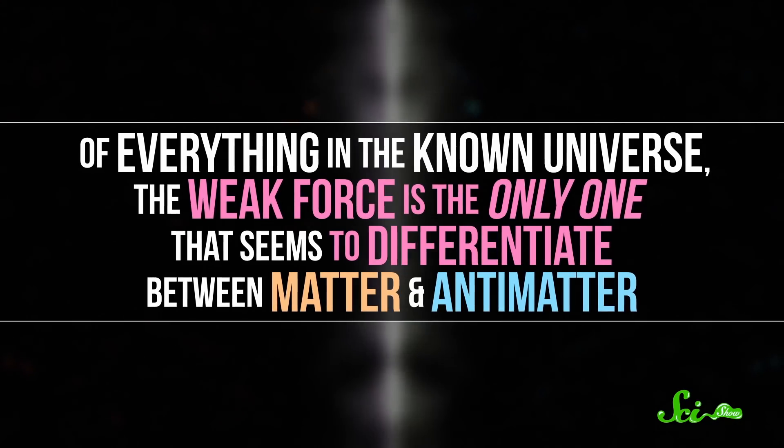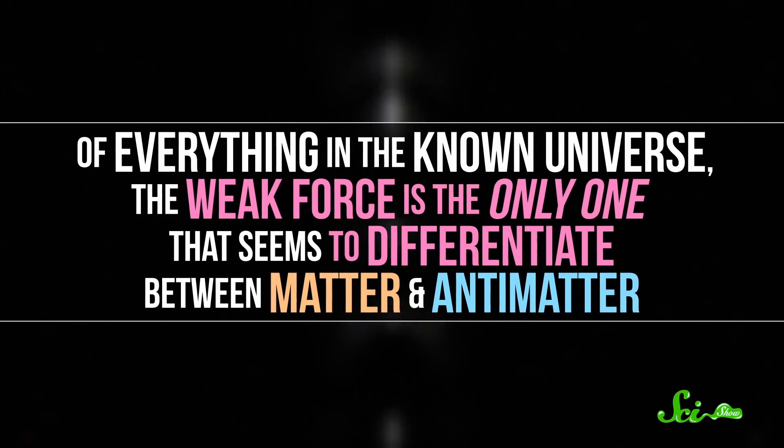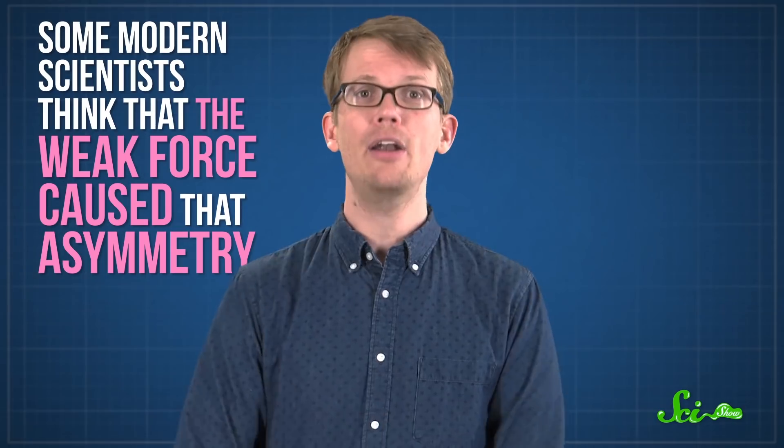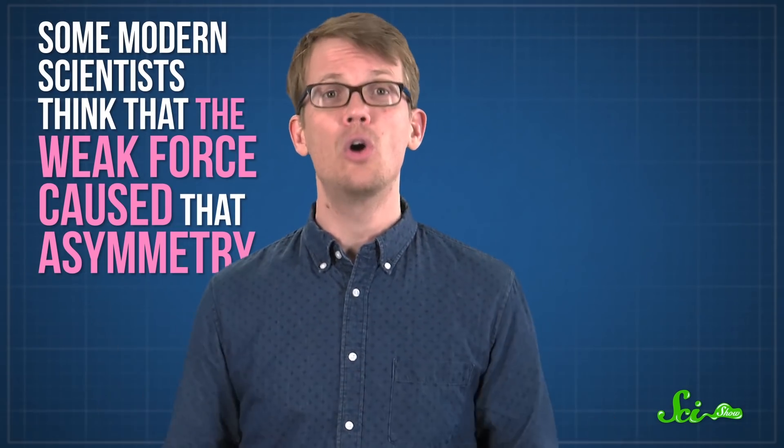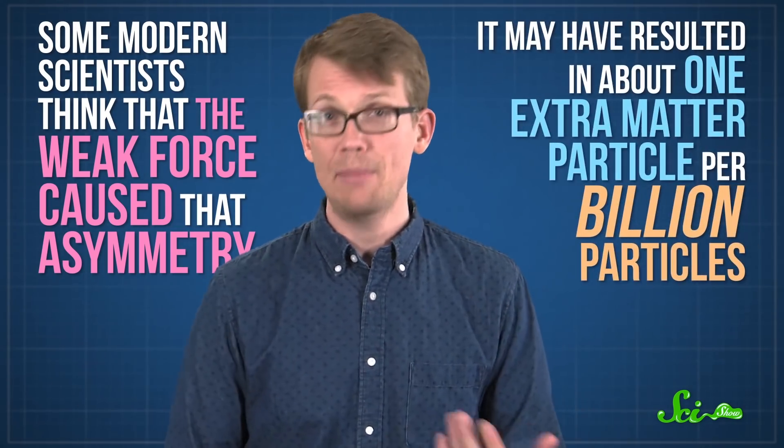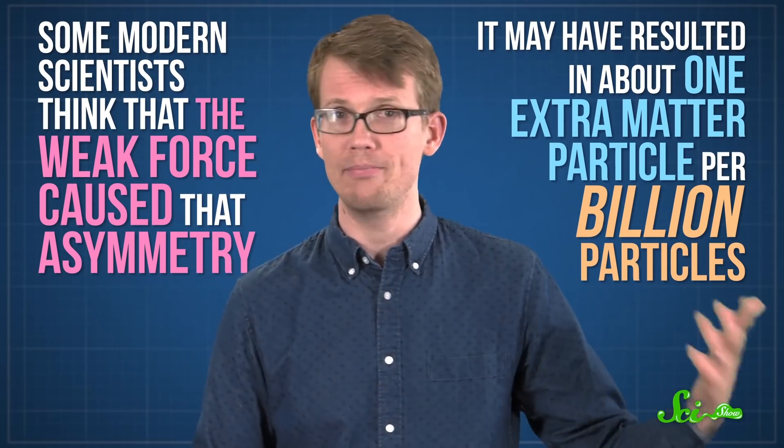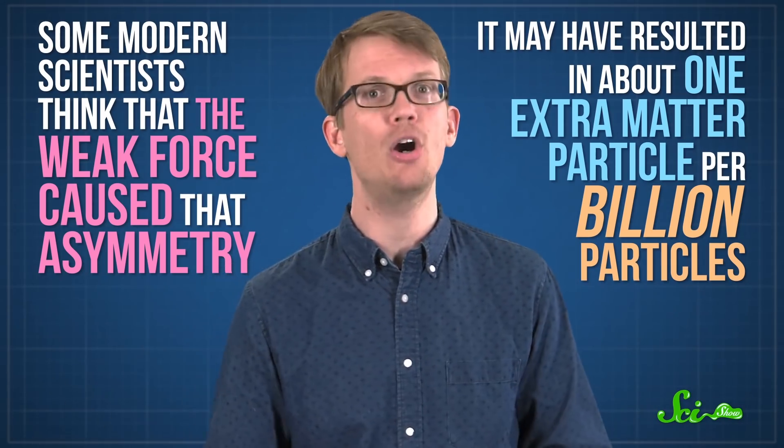Of everything in the known universe, the weak force is the only one that seems to differentiate between matter and antimatter. So some modern scientists think that the weak force caused that asymmetry. It may have resulted in about one extra matter particle per billion particles. And that's all it took to make everything everything.